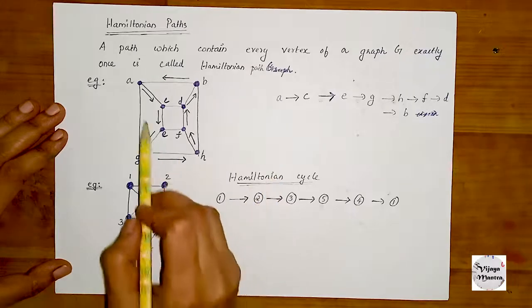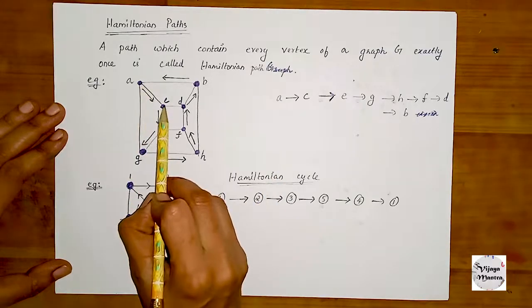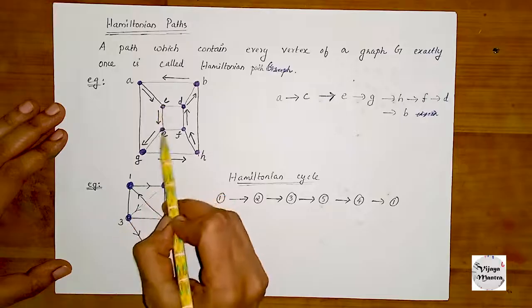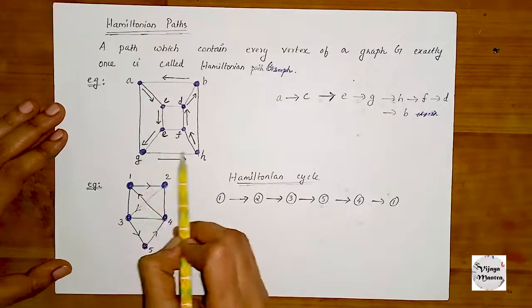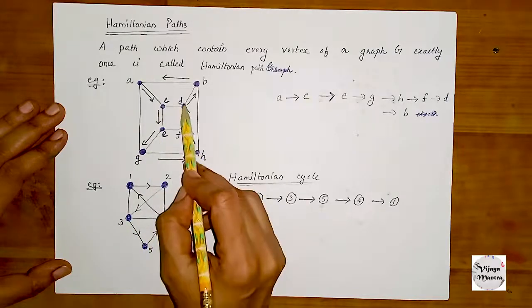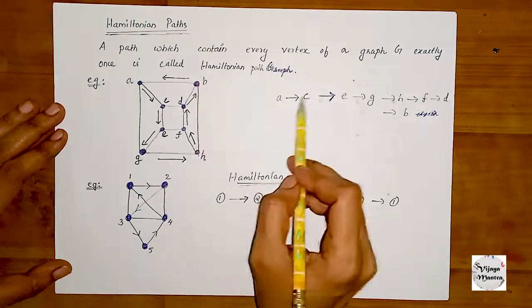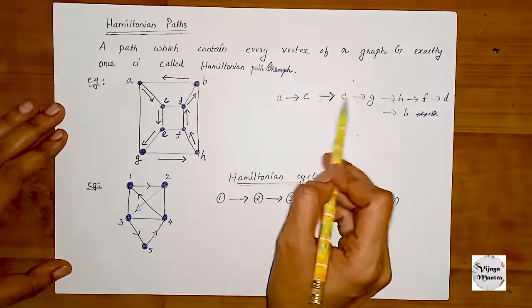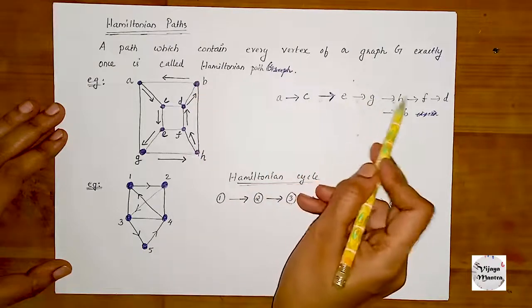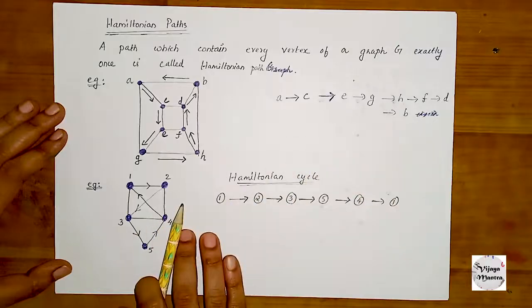Now let's see. The path is: A, C, E, G, H, F, D, B. That is a Hamiltonian path — it visits every vertex exactly once.